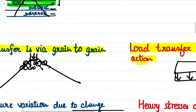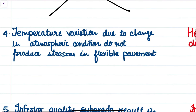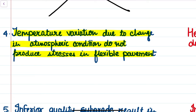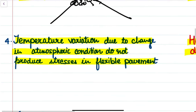Another important difference: temperature variation due to changes in atmospheric conditions does not produce stresses in flexible pavements, while rigid pavements are subjected to heavy temperature stresses. Because of temperature differences and seasonal changes, stresses are generated in rigid pavements, whereas in flexible pavements no such temperature stresses are produced.